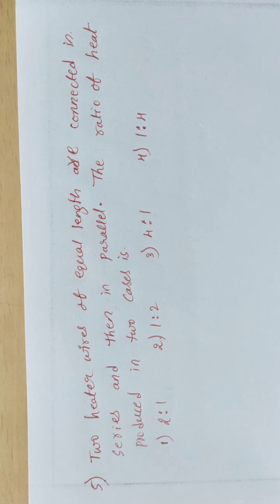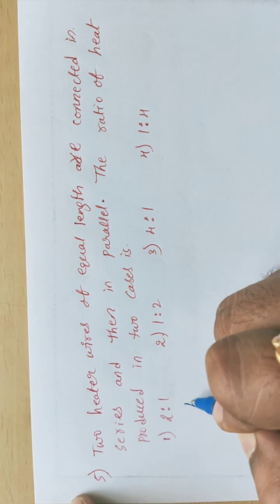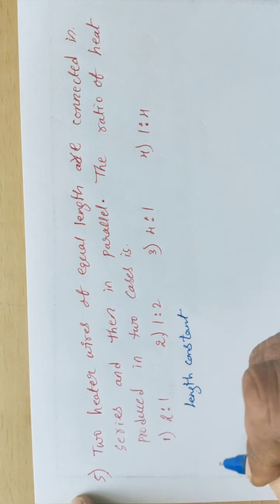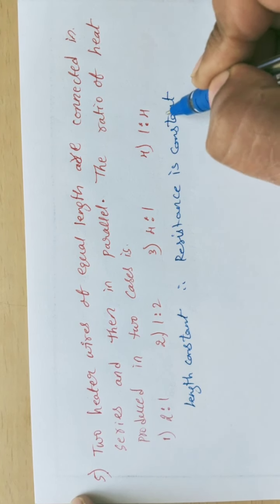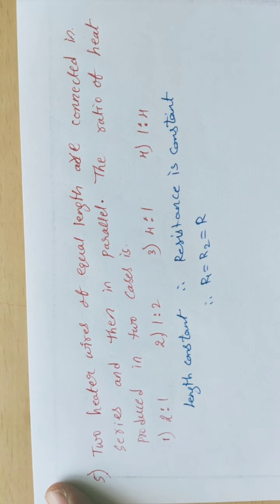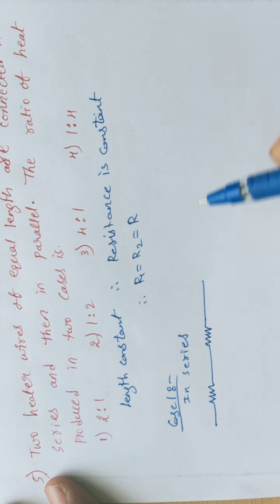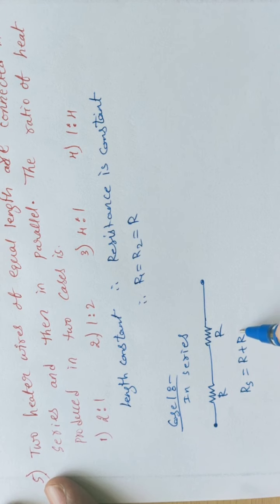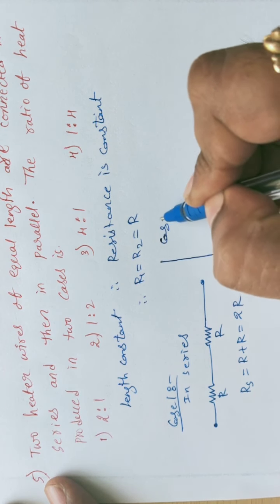Problem 3. Two heater wires of equal length are considered. Equal length means resistance is also constant, so R1 equals R2 equals R. In Case 1, they are connected in series. The series resistance Rs equals R plus R equals 2R.